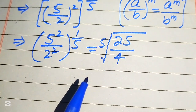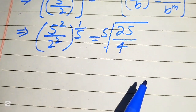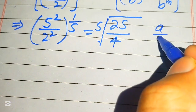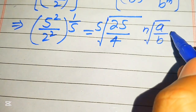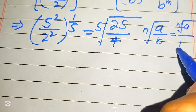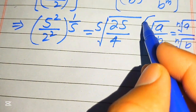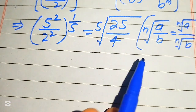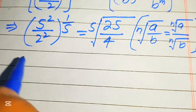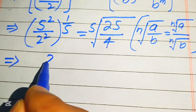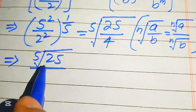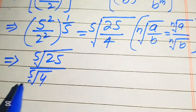In the next step, we apply radical laws. We use the law: if you have the nth root of a over b, it equals the nth root of a divided by the nth root of b. We separate the 5th root onto both values, giving us the 5th root of 25 divided by the 5th root of 4.